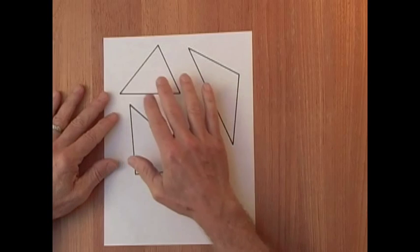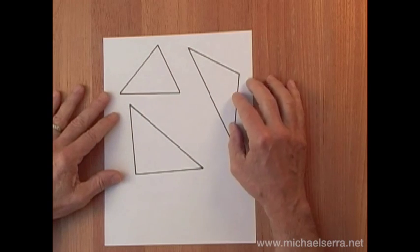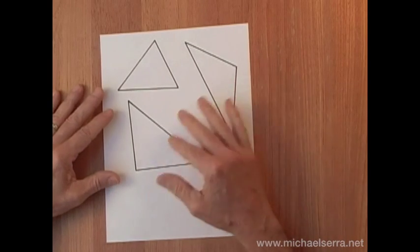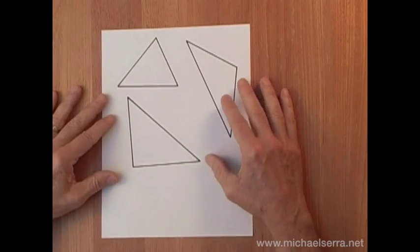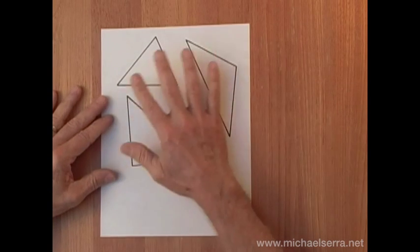The task here is to have students measure the three angles of a number of different triangles - some acute, some obtuse, some right. You want to have enough different triangles at each group of students so that you've got a variety of triangles.